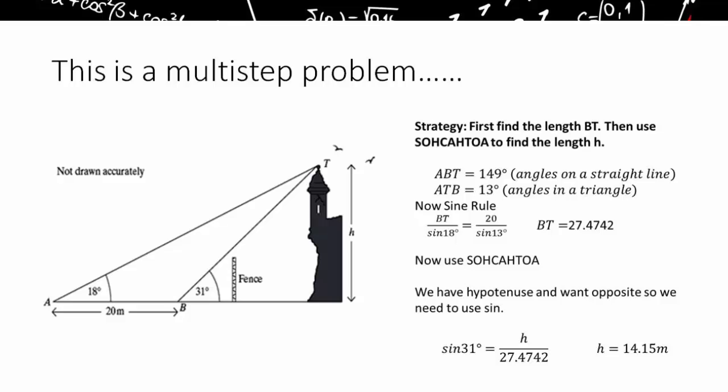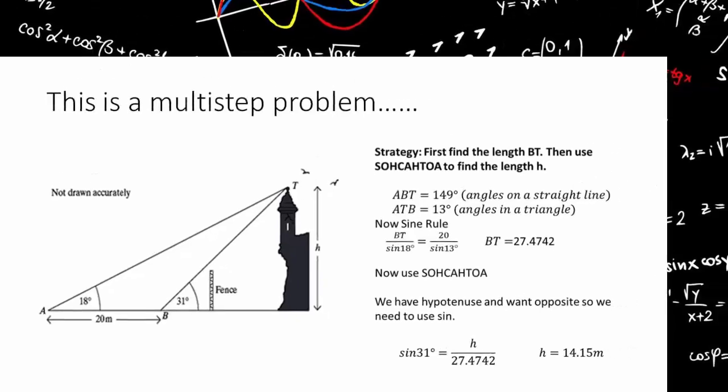Okay, now I know BT, I can use SOHCAHTOA. I've got the hypotenuse and I want the opposite side. I am of course talking about the smaller triangle here, the triangle which doesn't have a corner for the right angle but is BT and then the tower itself. I've got the hypotenuse and I want the opposite side H, so I need to use sine. That gives me sine of 31 equals opposite divided by hypotenuse. H isn't the hypotenuse here, it's the opposite, so I have H over 27.4742, which I already found out to be the length of BT, which is the hypotenuse, and that gives me H equals 14.15 meters correct to two decimal places.